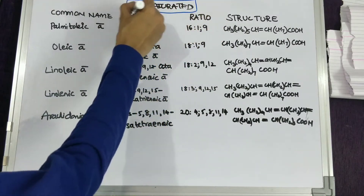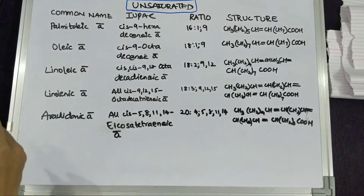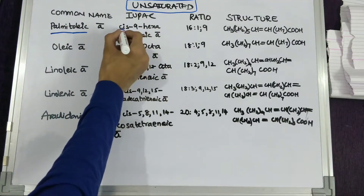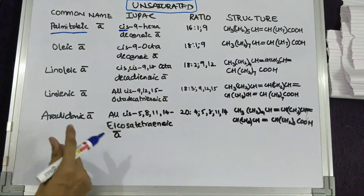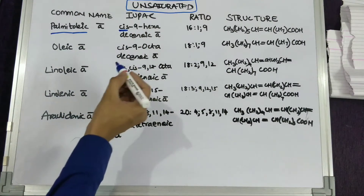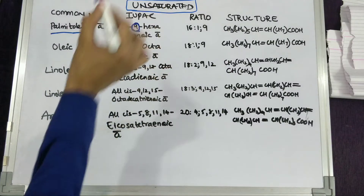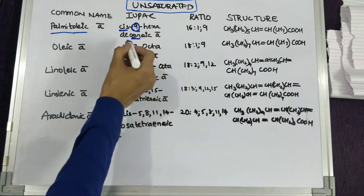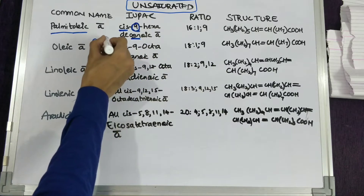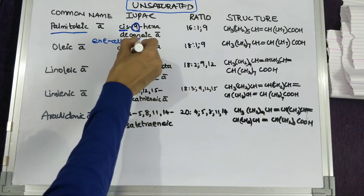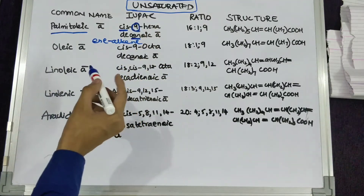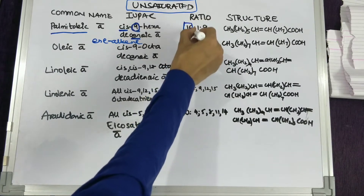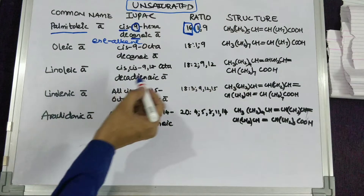Now let's see the nomenclature of some unsaturated fatty acid molecules. The IUPAC name for palmitoleic acid is cis-9-hexadecenoic acid, where 'cis' indicates the placement of atoms around the double bond, and '9' indicates the position of the double bond. The presence of 'en' in the structure indicates an alkene, that is, the presence of a double bond. The 16-carbon structure has one double bond and it is on the ninth carbon.